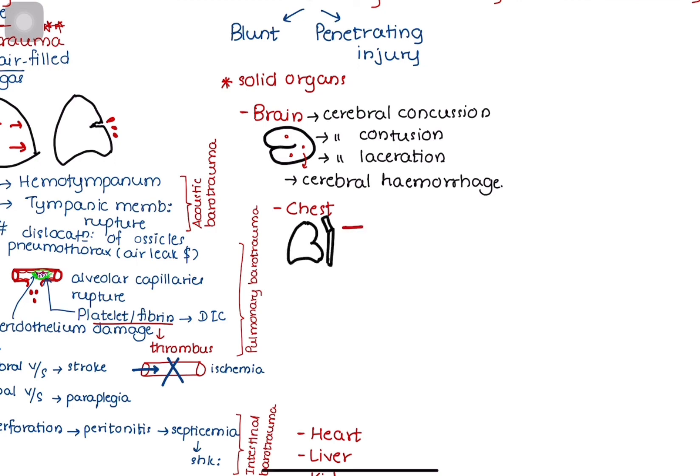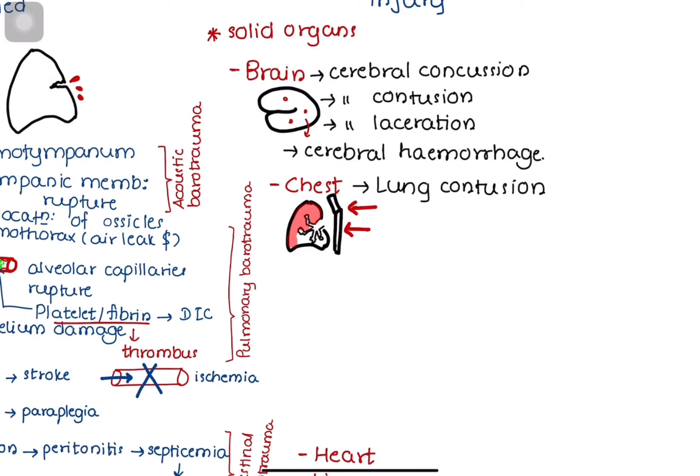Blunt chest injuries may cause lung congestion, causing extravasation of blood into the interstitial tissues, compressing the alveoli, leading to respiratory depression, respiratory distress syndrome, and finally respiratory failure.